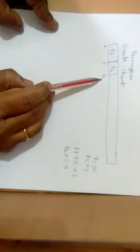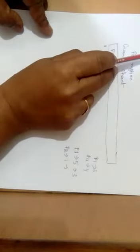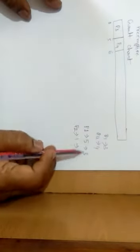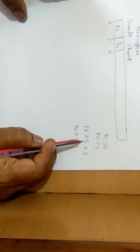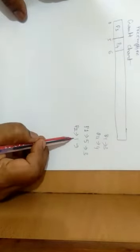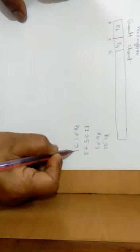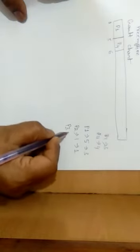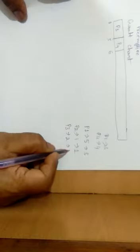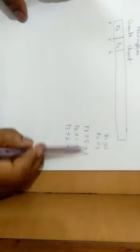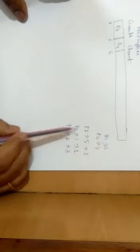P4's burst time is 1, so 5 plus 1 equals 6. By this time P5 has not yet arrived. We have P1 remaining with burst time 5 and priority 3, P2 with burst time 1 and priority 1, P3 with burst time 2 and priority 3. P1 and P3 have equal priority so we apply first-come first-serve: 6 plus 5 equals 11, then we choose P3.